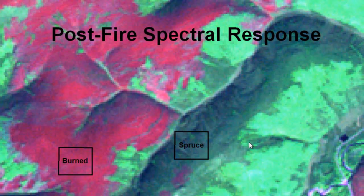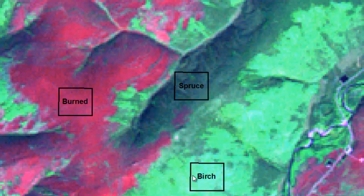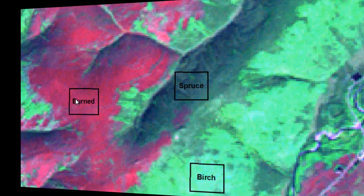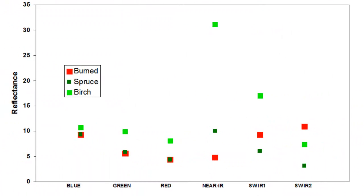Let's take an example of a fire near Fairbanks. Here's an area that burned, here's an area on a north-facing slope that's spruce, and here's an area on a south-facing slope that's birch. If we look at the spectral response inside these spruce, birch, or burned pixels, we see from the visible bands there's very little difference between the spruce area and the burned area. They're both fairly low in spectral reflectance, but there's a big difference in the near-infrared. As the canopy is consumed, we typically have a substantial decrease in near-infrared reflectance.